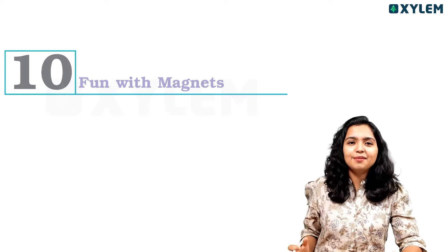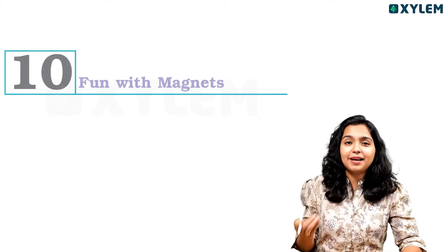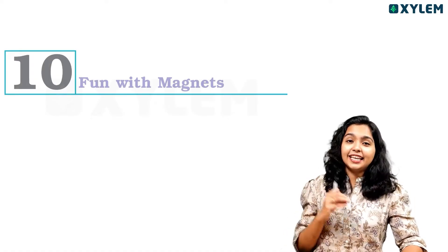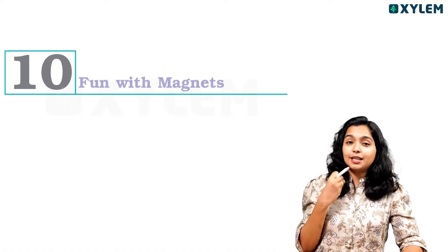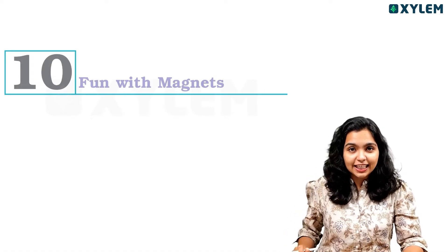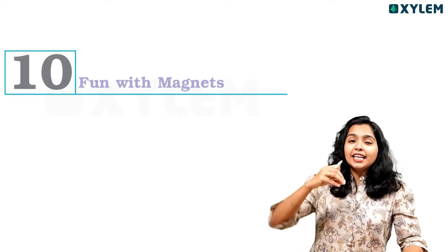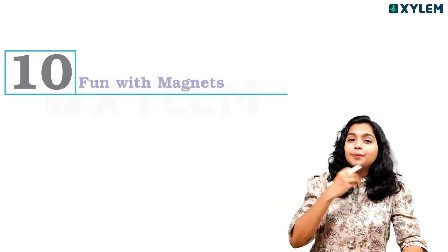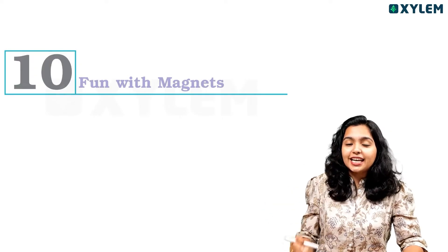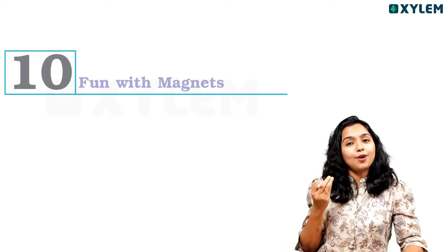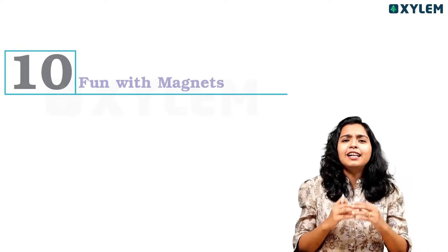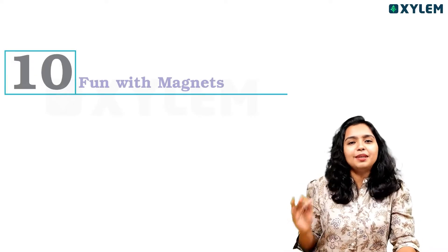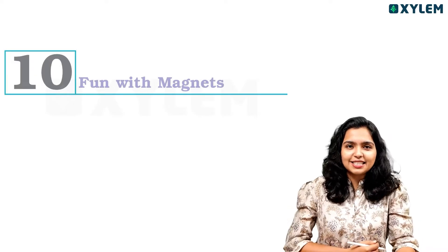In this chapter we will learn about: what are magnets, what are magnetic substances, and what are non-magnetic substances.